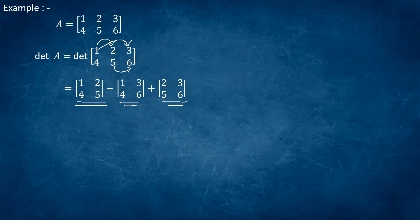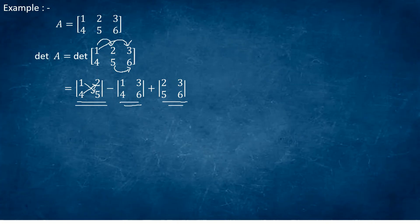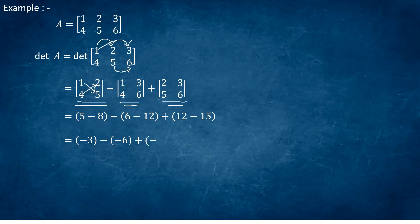These three minors are 2×2 square determinants, so we apply the definition for evaluation of 2×2 square determinants. We multiply 1 with 5 minus 4 with 2, and apply this to the next two 2×2 determinants. These evaluate to (5 − 8) − (6 − 12) + (12 − 15), which gives −3 − (−6) + (−3), simplifying to −3 + 6 − 3, which equals zero.